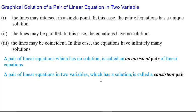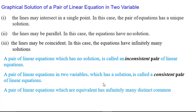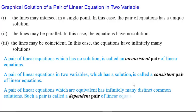A pair of linear equations in two variables which has a solution is called a consistent pair of linear equations. A pair of linear equations which are equivalent has infinitely many distinct common solutions — such a pair is called a dependent pair. This is for the third case, when the lines are coincident. Coincident lines are equivalent, giving infinitely many solutions, and in that case we say they are a dependent pair — one line is dependent on the other.